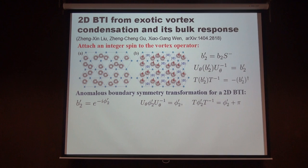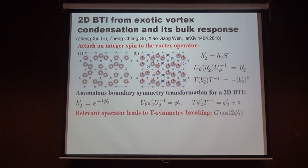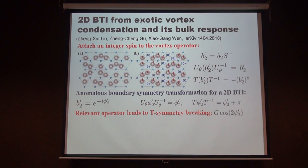Once phi-2-prime has this non-trivial pi shift under time reversal, you cannot simply add a cosine-phi-2-prime term because it would break the symmetry. The way to compensate is to add cosine(2*phi-2-prime), but because this term has two minima at zero and pi, it still spontaneously breaks time reversal symmetry when it becomes relevant. That is the argument: if the vortex has a composite structure it is a non-trivial bosonic topological insulator in two plus one dimensions. If time reversal is spontaneously broken on the boundary, the system can be gapped; otherwise there is no way to put a symmetric gapped state on the boundary.